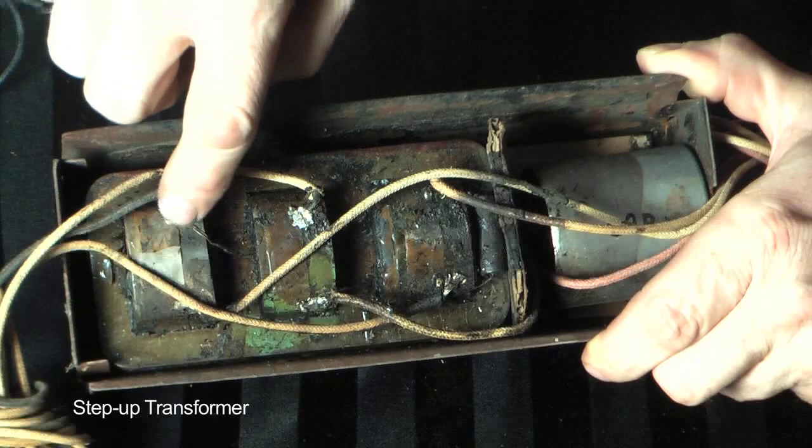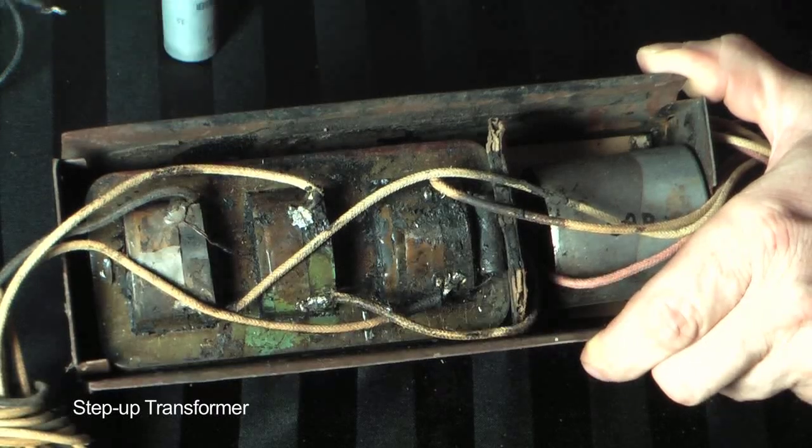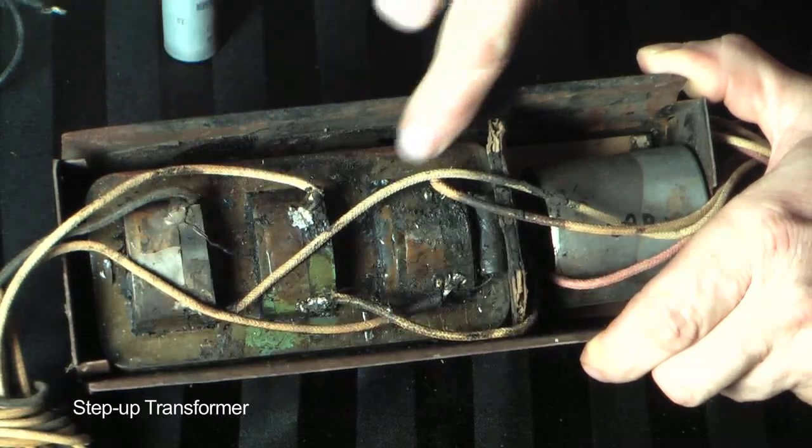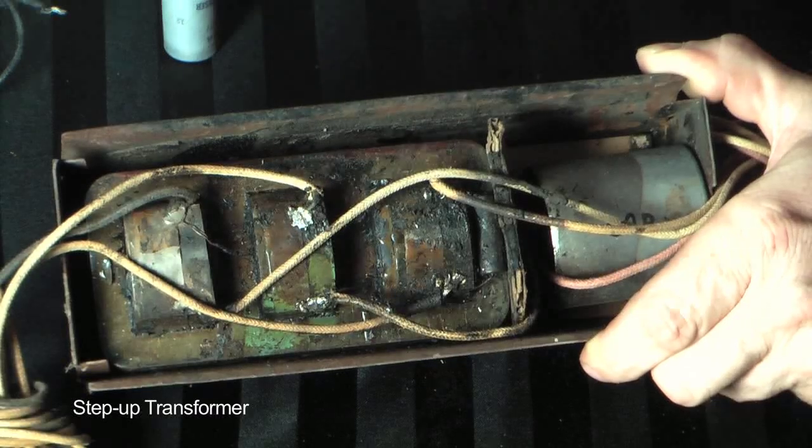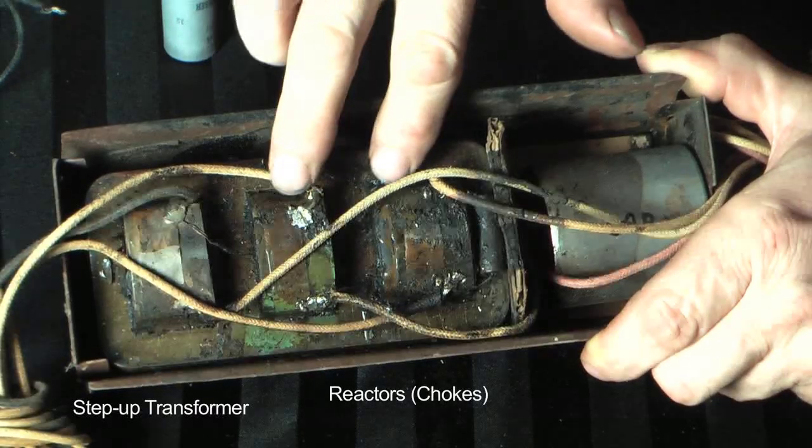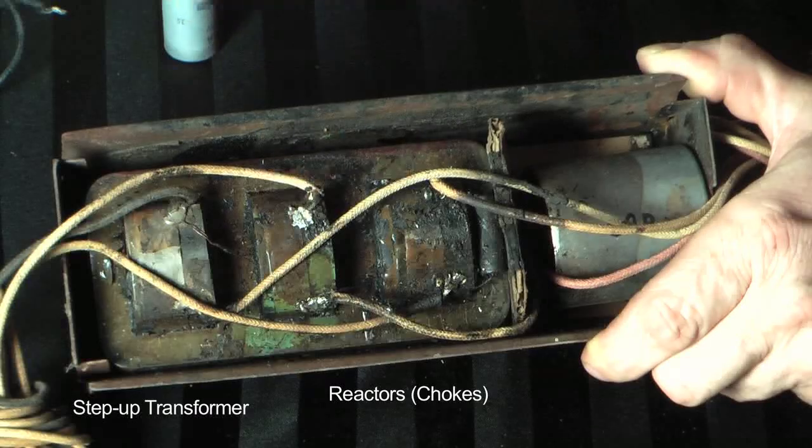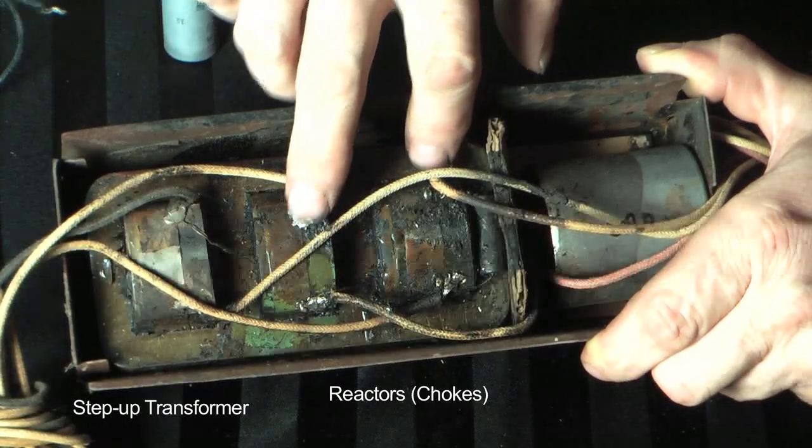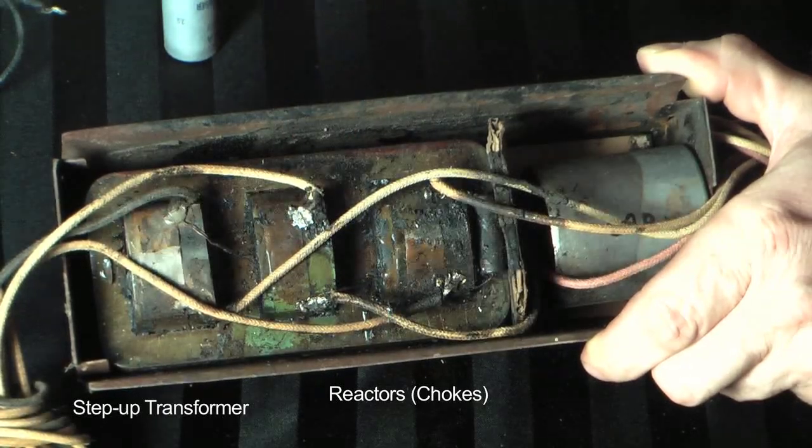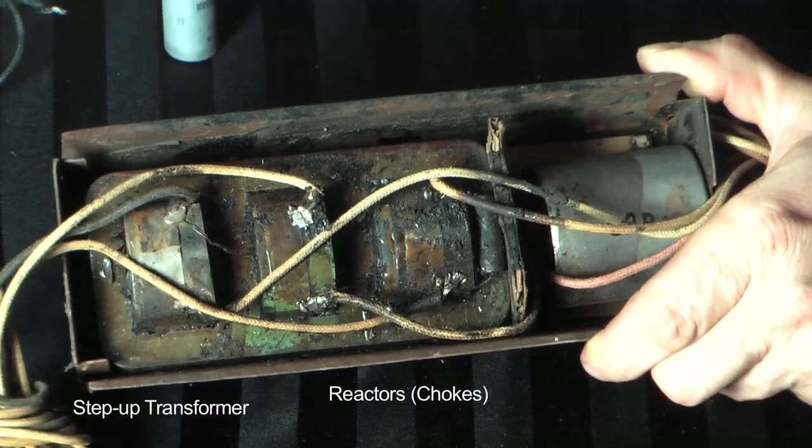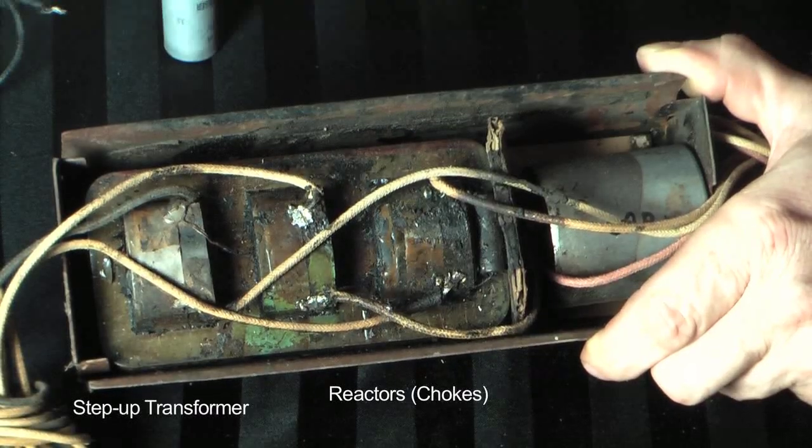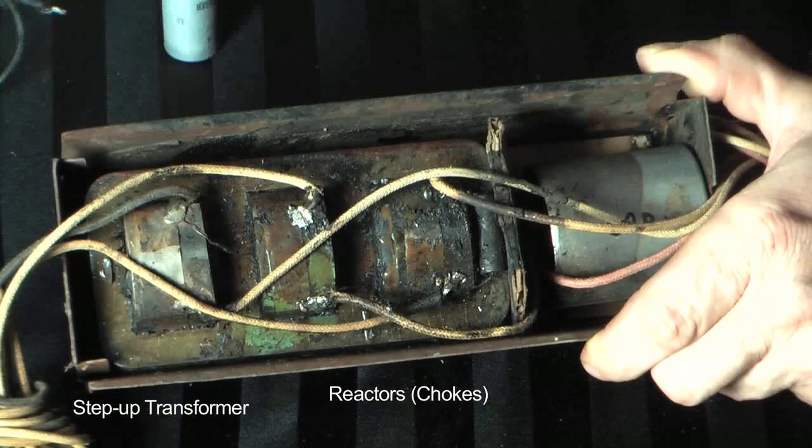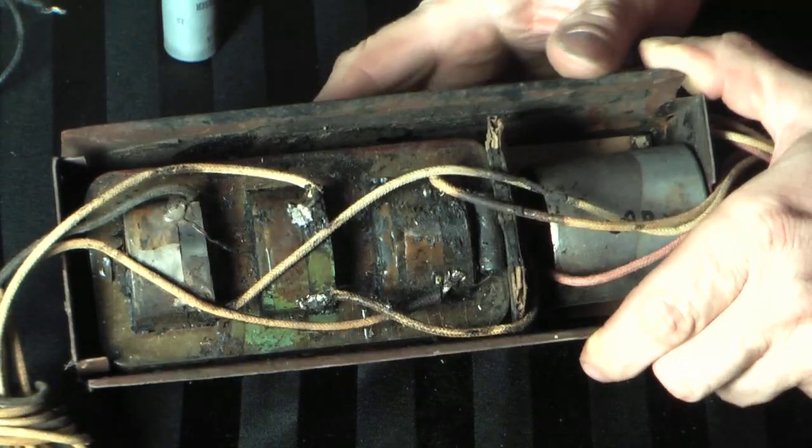Then you have two reactors, one for each lamp. That's what actually limits the current to the lamps so they can't get too much current. They're called chokes. And then there's a third winding called a starting compensator, which I won't go into right now. And that's necessary for starting of one of the two lamps.